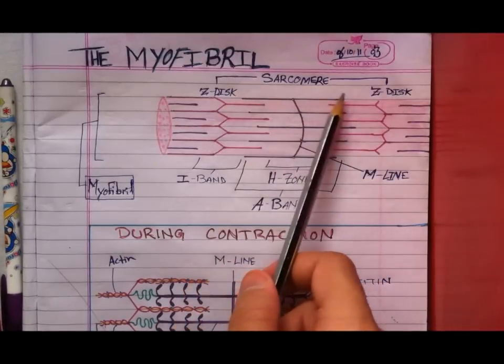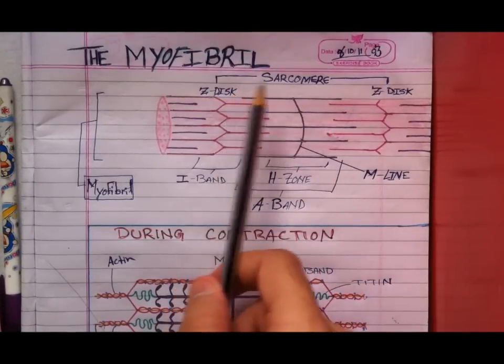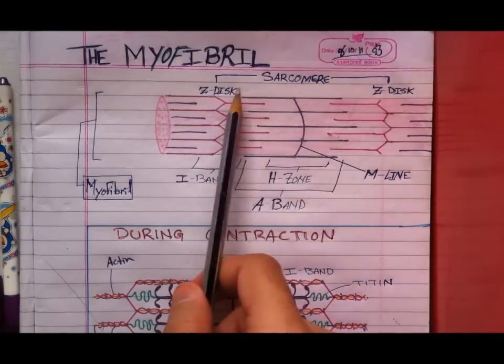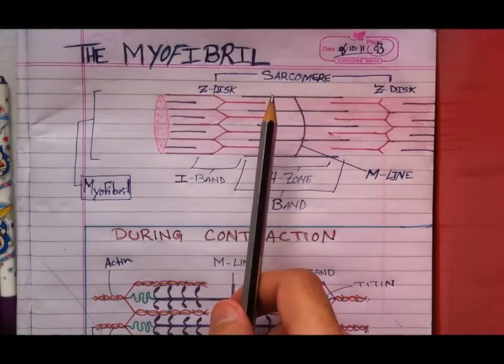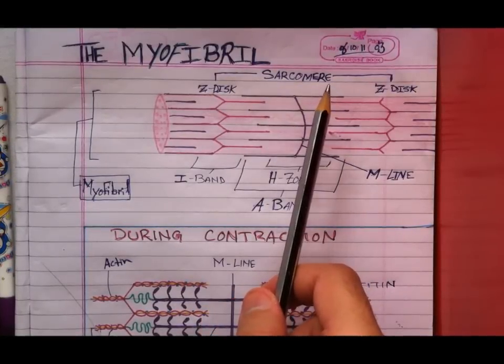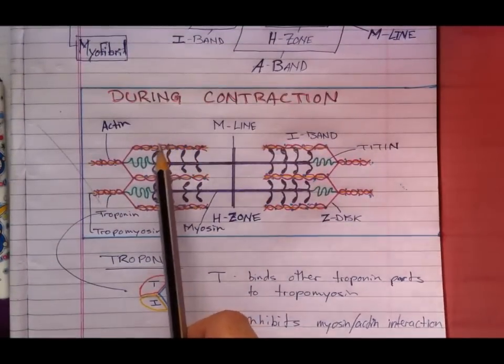In the middle of the I-band you'll find a Z-disc, and from one Z-disc to the next you have what's called a sarcomere. Don't forget the sarcomere is the basic contractile unit. During rest the sarcomere has a length of 2.5 microns, but during contraction the sarcomere has a length of 1.5 microns.